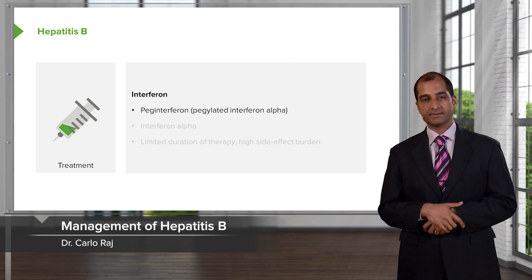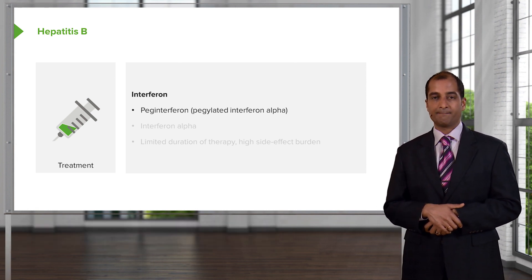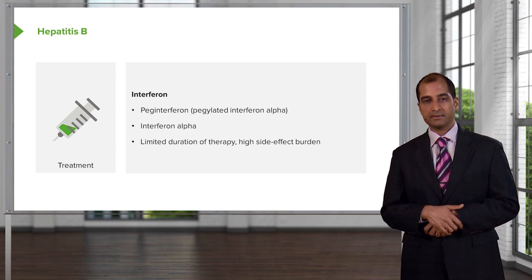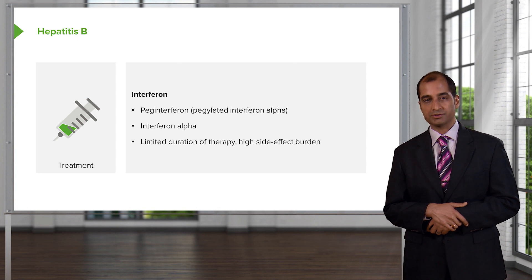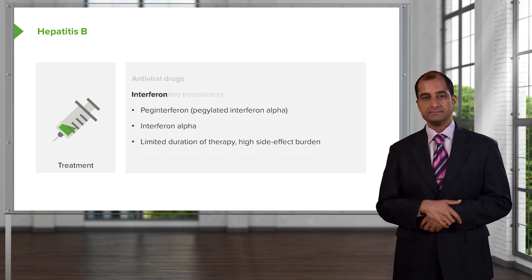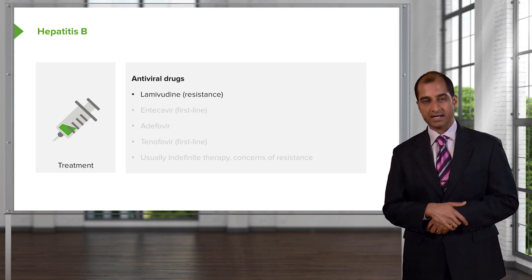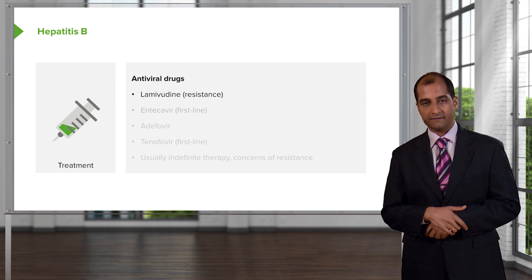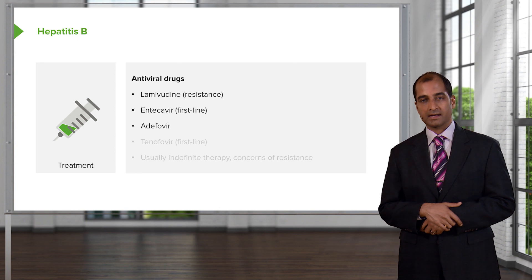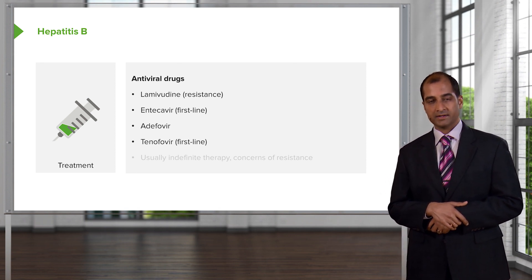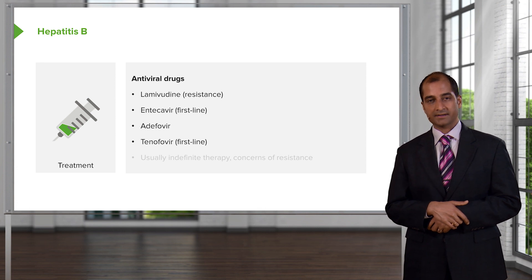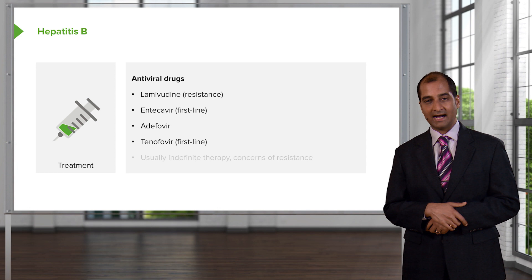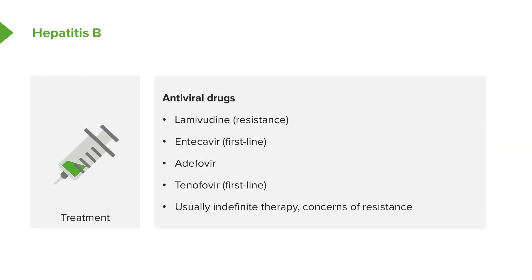Management of hepatitis B: interferons include PEG interferon and interferon alpha — memorize alpha for hepatitis B. There is a limited duration of therapy and a high side effect burden with interferons. Antiviral drugs include lamivudine (resistance is often seen), adefovir, entecavir, and tenofovir. Notice the suffix '-vir' — these target viral hepatitis, specifically hepatitis B. Indefinite therapy may be required, and you must watch for resistance.